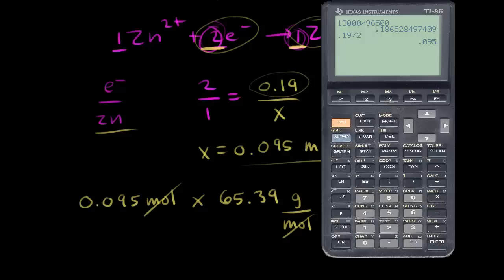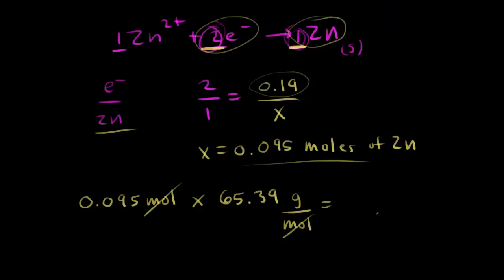Let's do that math. So we have 0.095 times 65.39, which is equal to 6.2. So we get 6.2 grams of zinc. That's our final answer. That's how much zinc deposits on the zinc electrode.